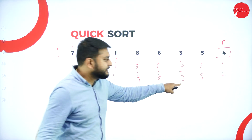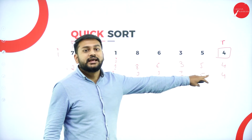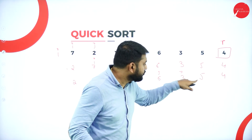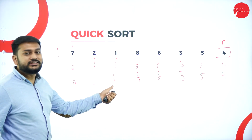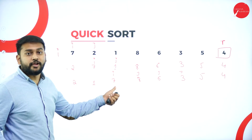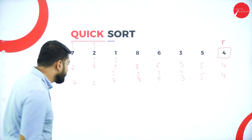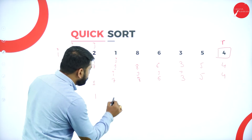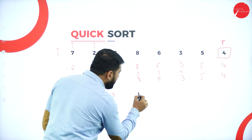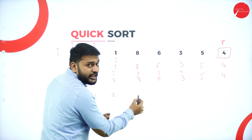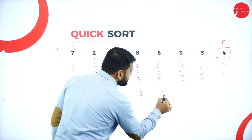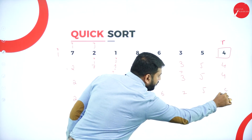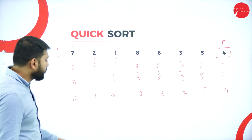J is now at three. Three is less than four — should I swap? Yes, I have to swap three with the element at I. After swapping, the array becomes: 2, 1, 3, then eight, six, seven, five, four in the remaining positions. I was at this position and it will get incremented.